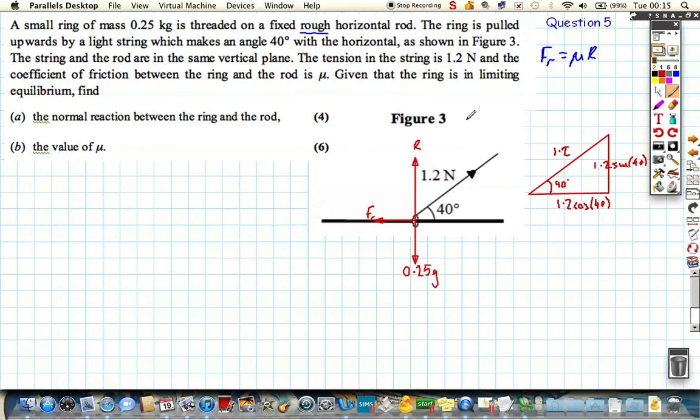As always with these questions, we don't know what coefficient of friction is, but normally in these questions we need to resolve in two different directions. So the very first thing I'm going to do, I'm going to resolve upwards. Resolving upwards, I'm going to see that r is acting upwards and 1.2 sine 40 is also acting upwards. So as it's in limiting equilibrium, we've got to take away the weight first, 0.25g. As it's in limiting equilibrium, it's not accelerating, it's not moving, it's equal to zero.